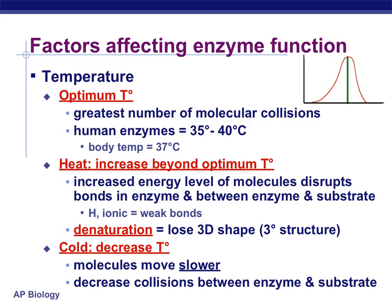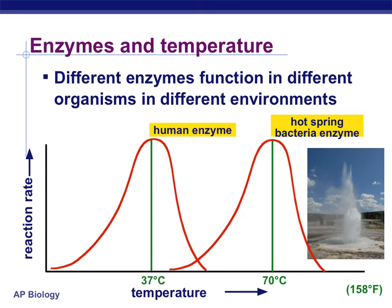Think about frying an egg. You use the heat to fry the egg, and you're denaturing the proteins in it, changing its physical structure. A cold environment will obviously decrease the temperature — molecules will move slower, decreasing the likelihood of collisions between the enzyme and the substrate. So all enzymes have an optimum temperature at which they are going to be the most effective.